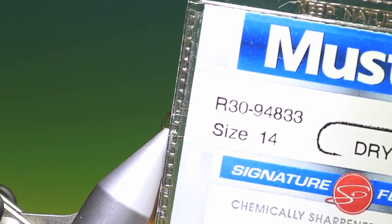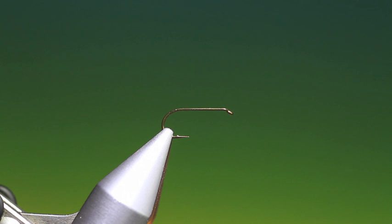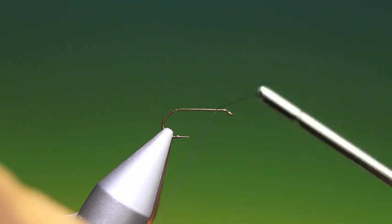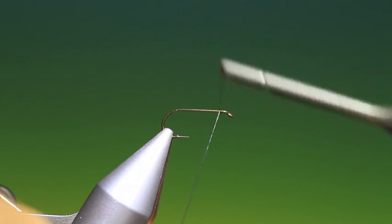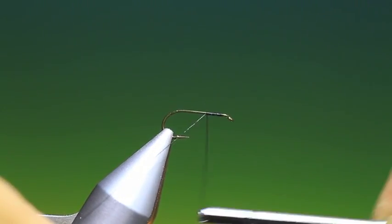Okay, this is the Peacock Caddis. We're tying it on a Mustad R30 size 14 dry fly hook. I know very little about this pattern other than it fishes very well. It's one of the classic caddis patterns.